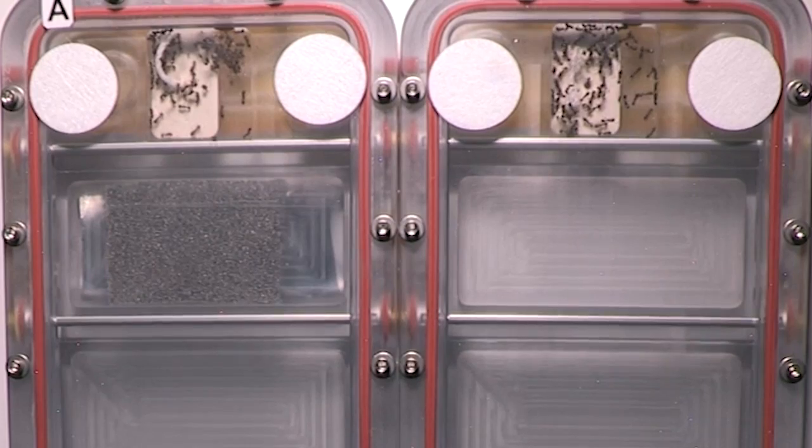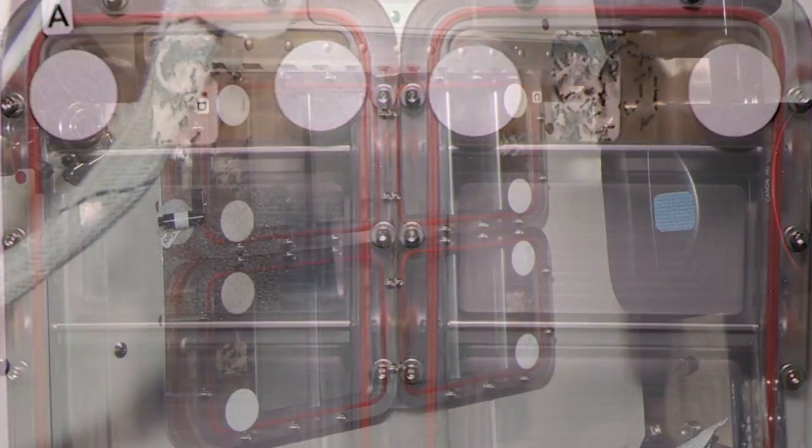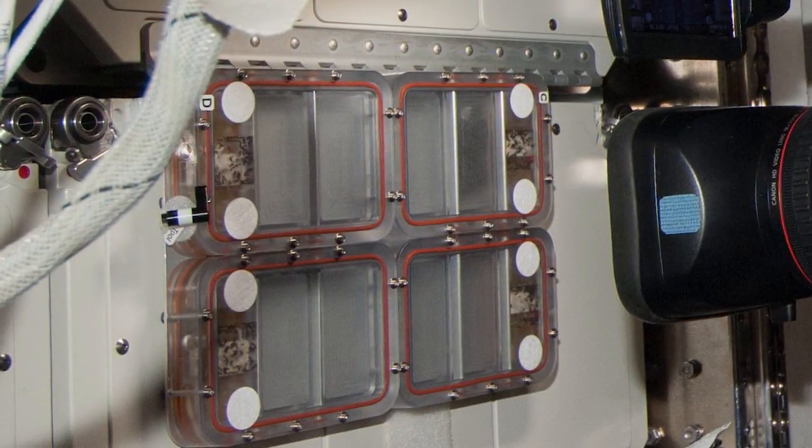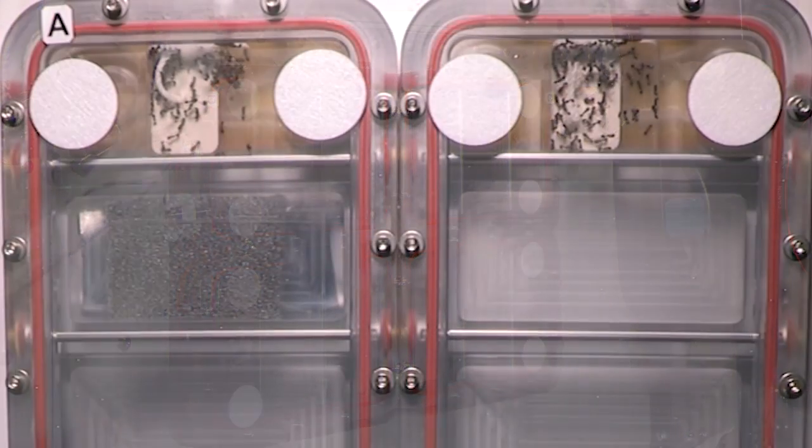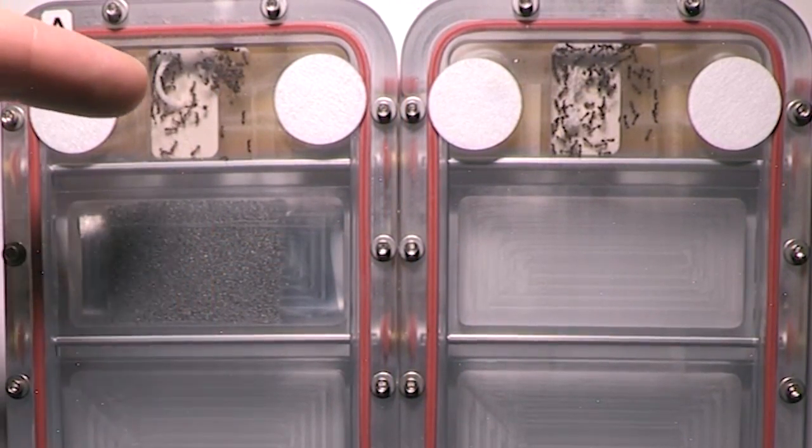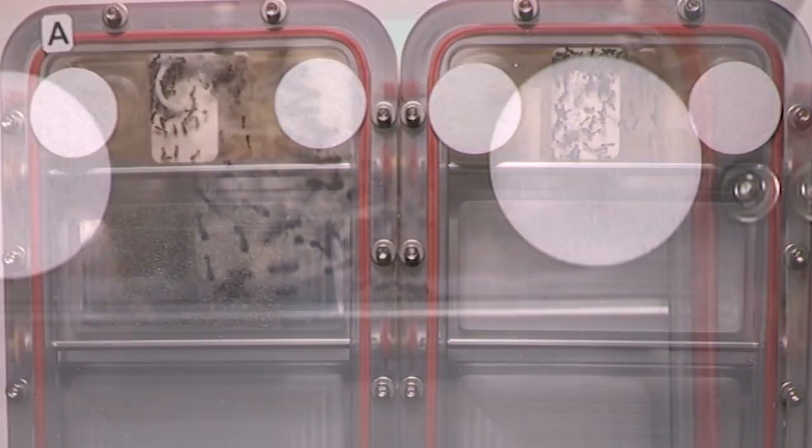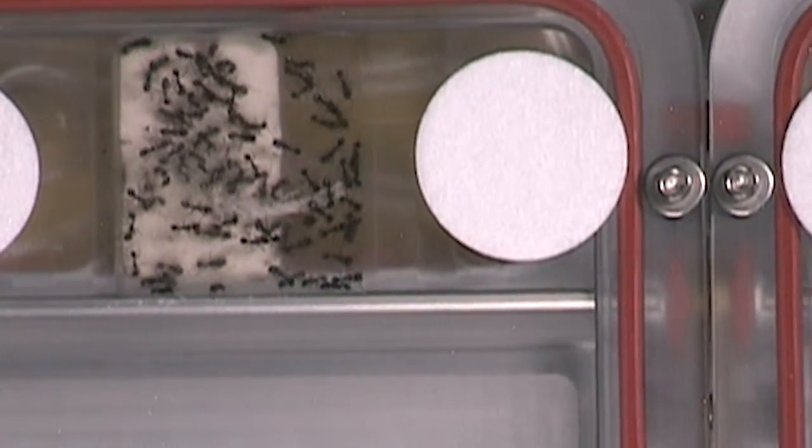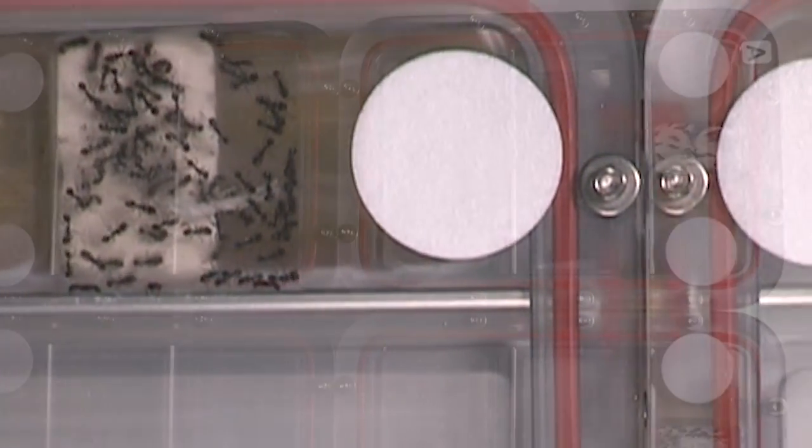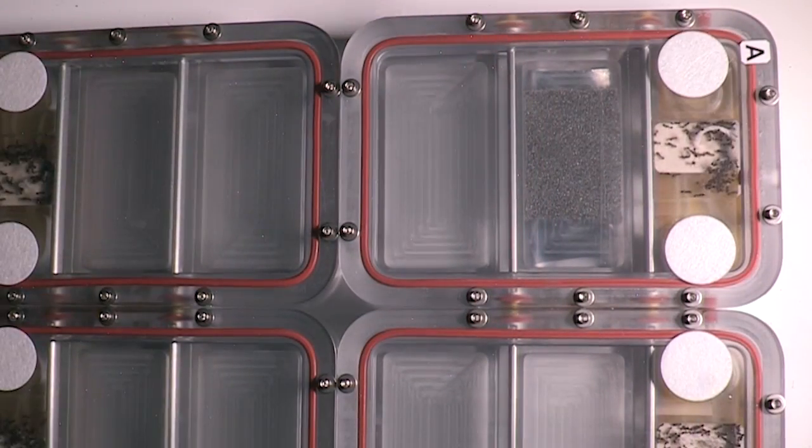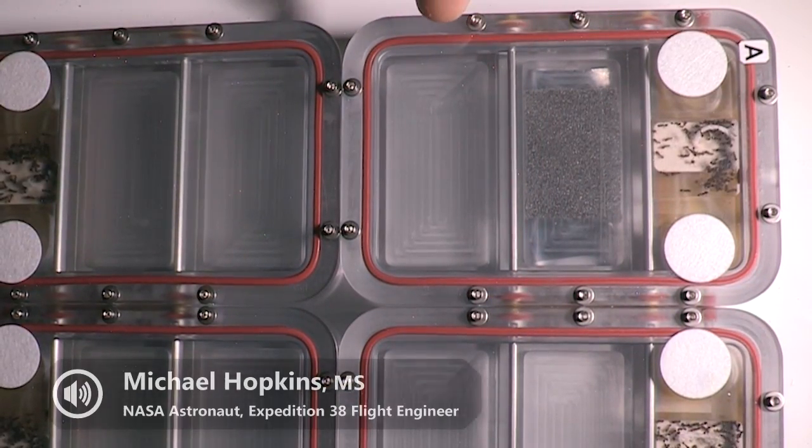So let's talk about the test setup. What you see at this point is there's four habitats here. And each of the habitats has a nesting area. And you can see the nesting area up here. And that's where the ants are at this point in time, how they came up in the rocket. And then what will happen is we have foraging area A and foraging area B.